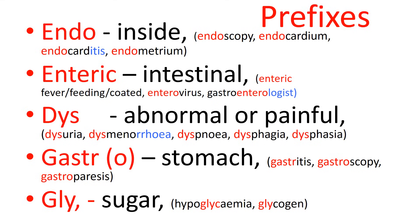'Endo' means inside. So endoscopy means to look inside. A colonoscopy looking into the colon, a gastroscopy looking into the stomach, a cystoscopy looking into the bladder are all forms of endoscopy. The endocardium is the inside layer of the heart — the outside layer is the pericardium, the middle layer is the myocardium. Endocarditis would be inflammation of the endocardium. The endometrium is the inside layer of the uterus.